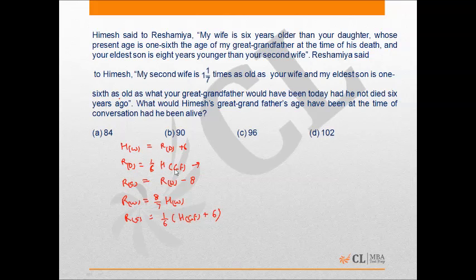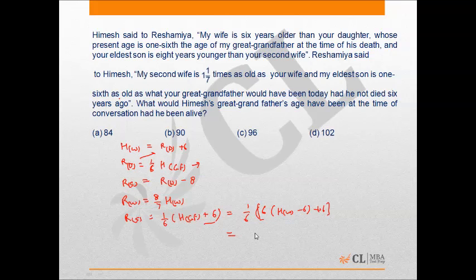From this, I can say that great grandfather's age is six times Rd, and Rd can be Hw minus 6. So I can write this equation as: one sixth of this equals six times of (Hw minus 6) plus 6, which gives Hw minus 5. And RS can be written as Rw minus 8, where Rw equals 8/7 of Hw. So RS equals 8/7 of Hw minus 8, and this is equal to Hw minus 5.